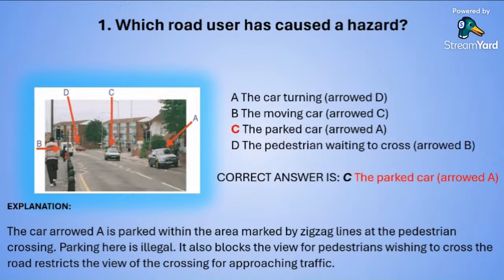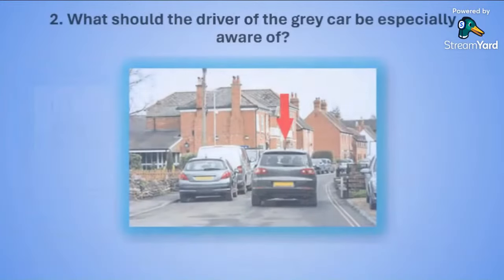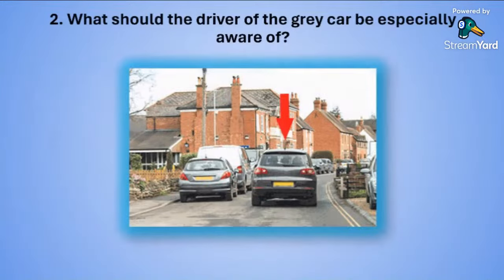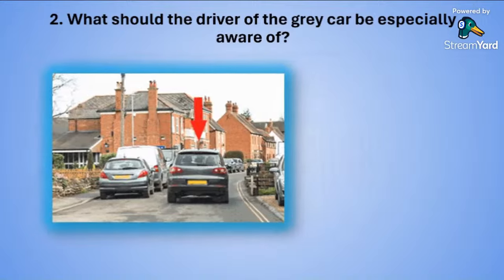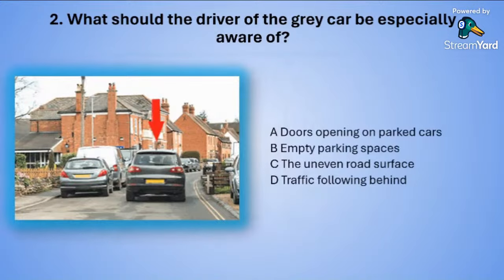Question two: What should the driver of the grey car be especially aware of? The red arrow is pointing at the grey car. A: doors opening on parked cars. B: empty parking spaces. C: the uneven road surface. Or D: traffic following behind.